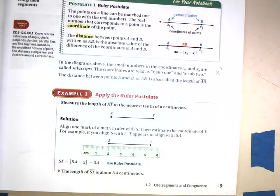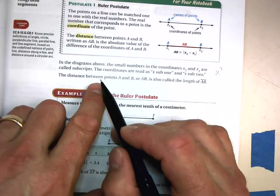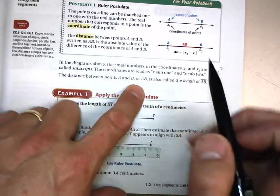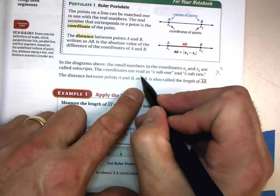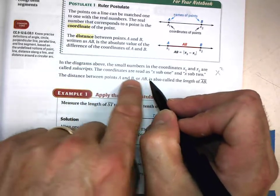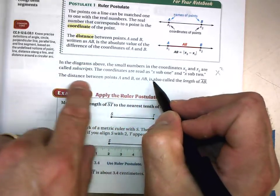This is the X coordinate of point 1, and we could say X sub 1 or X 1. The distance between points A and B, or AB—that symbol says all of that for us.